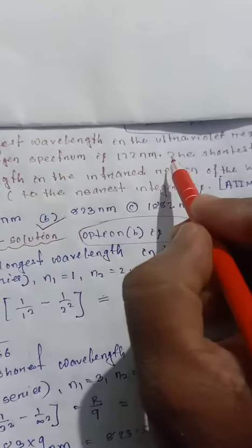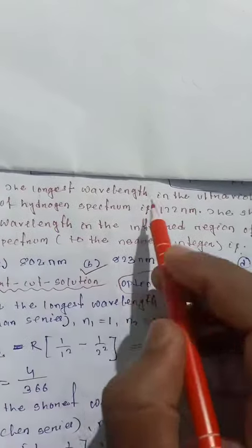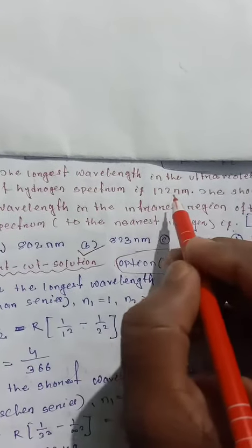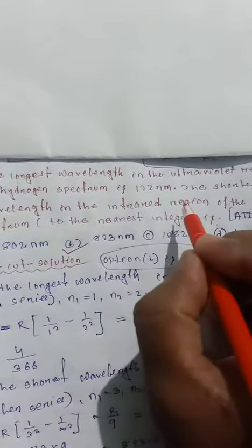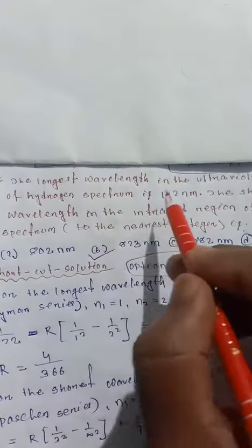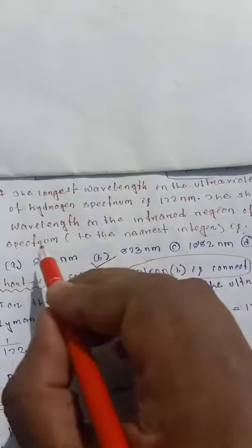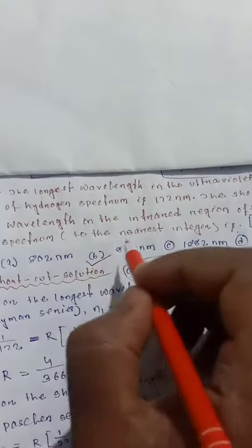The longest wavelength in the ultraviolet region of hydrogen spectrum is 122 nanometers. The shortest wavelength in the infrared region of the hydrogen spectrum is how much?